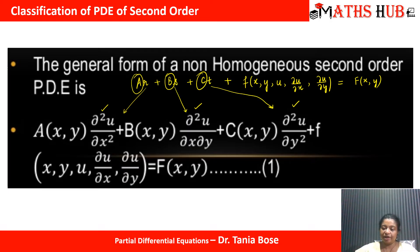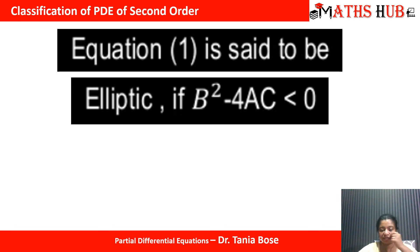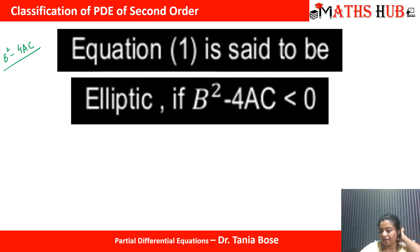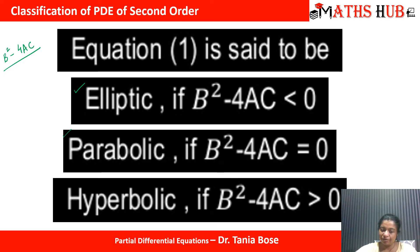After comparing, the next step is to compute the discriminant b² − 4ac. According to its value, we classify the second order PDE: if b² − 4ac < 0, it is elliptic; if b² − 4ac = 0, it is parabolic; and if b² − 4ac > 0, it is hyperbolic.